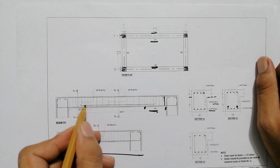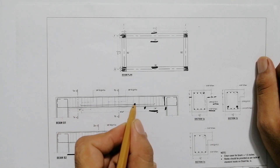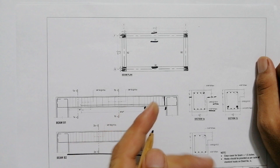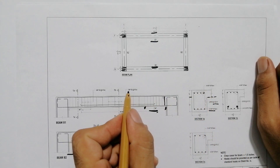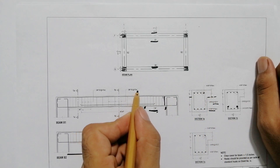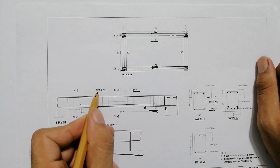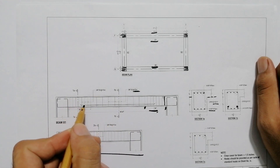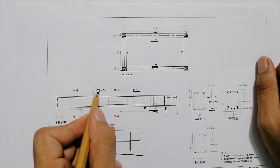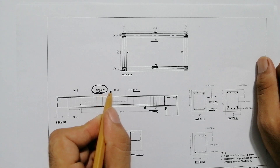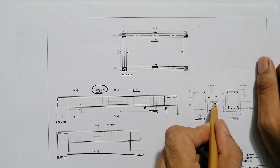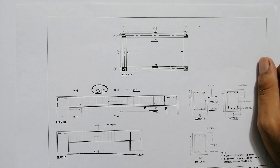For the long beam, at the mid-span the spacing should be maximum. Here you can see #3 stirrups with a spacing of 8 inches at mid-span, and 4 inches near the ends. As you can see here — that is where we get this detail.